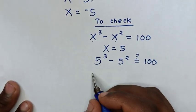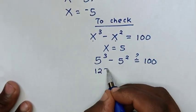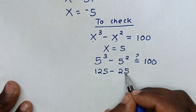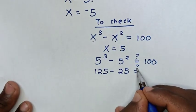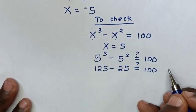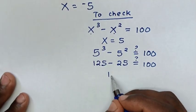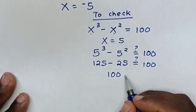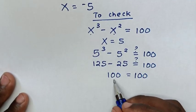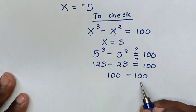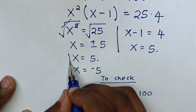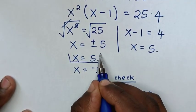Then 5 power 3 is 125, minus 5 power 2 which is 25, equals 100. So 125 minus 25 is 100, which equals 100. Since left side and right side are equal, it is true for x equals 5.